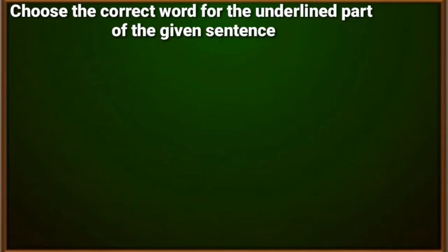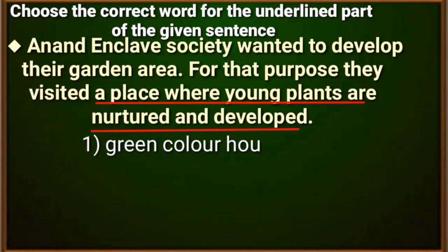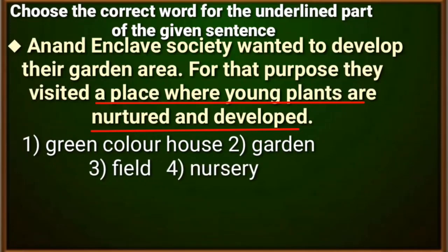Anan Enclave Society wanted to develop their garden area. For that purpose, they visited a place where young plants are nurtured and developed. The underlined part needs a one-word substitute. The options are: first, greenhouse; second, garden; third, field; and fourth, nursery.